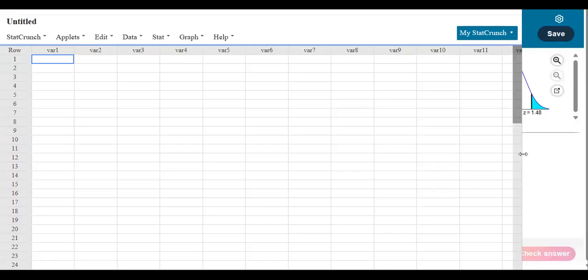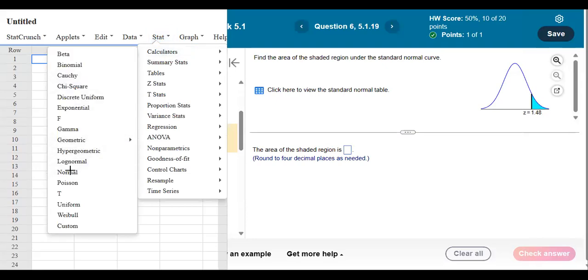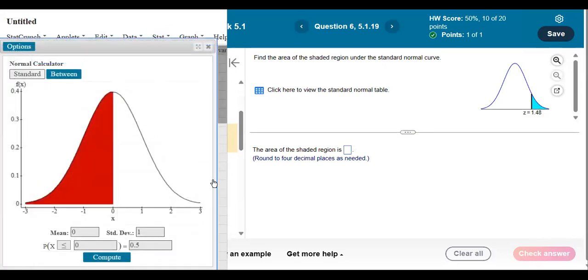Scoot that over a little bit. I'm going to go to Stat, Calculators, Normal, and here it is.